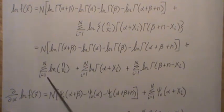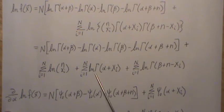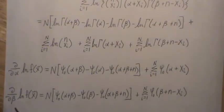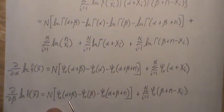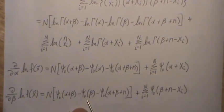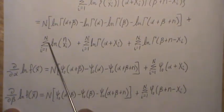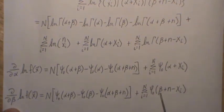Down here there's no alpha, so it's constant. No alphas here either, so it's constant. Then we just get the sum of digamma of alpha plus x_i. For the partial with respect to beta, it's the same structure: n, then digamma of alpha plus beta — that's constant — digamma of beta, then digamma of this term. No beta here, so it drops out, and we get the sum of digamma of beta plus n minus x_i.